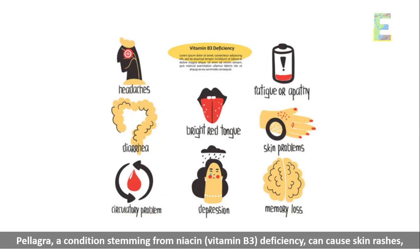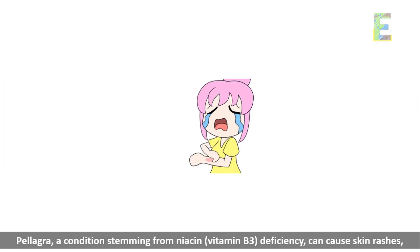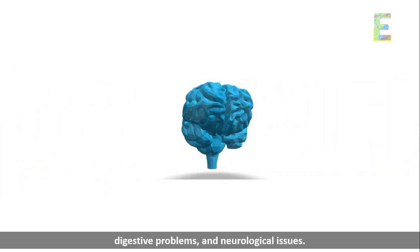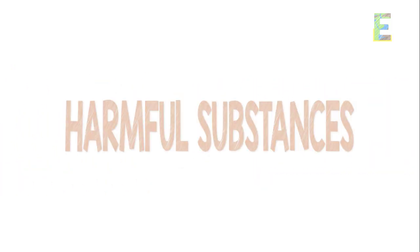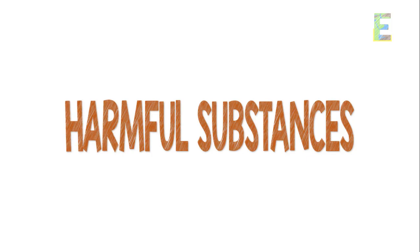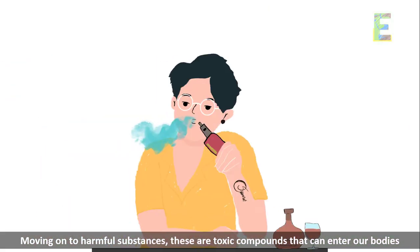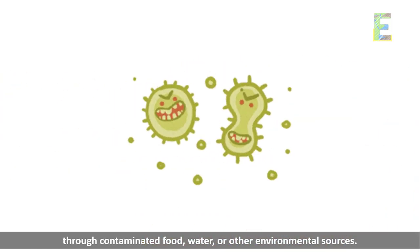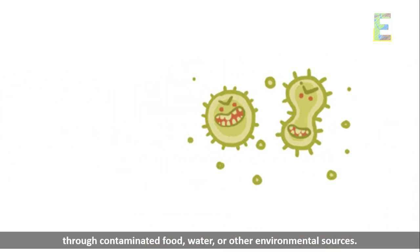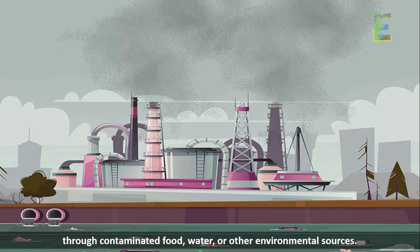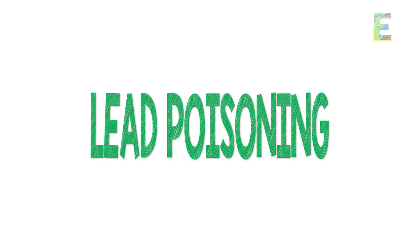Pellagra, a condition stemming from niacin (vitamin B3) deficiency, can cause skin rashes, digestive problems, and neurological issues. Moving on to harmful substances — these are toxic compounds that can enter our bodies through contaminated food, water, or other environmental sources.